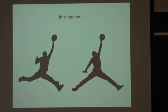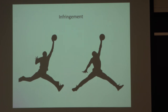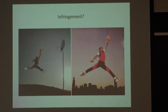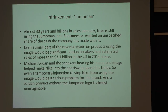The Jumpman logo: the one on the right is Nike's iconic logo of Michael Jordan dunking a basketball. The one on the left was actually a silhouette of an image taken by a photographer who sold it to Life Magazine for $15,000 and then licensed it to Nike for a small amount. Nike then went out and created their own silhouette without paying for it. There was a big lawsuit between the photographer and Nike, and the case was eventually settled.